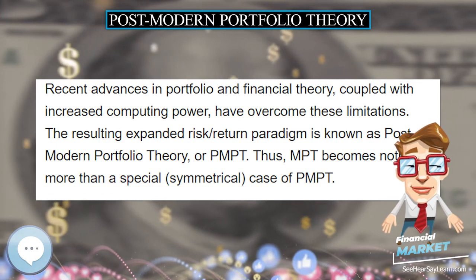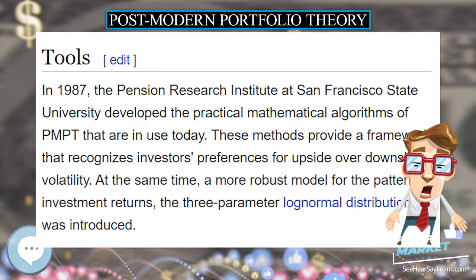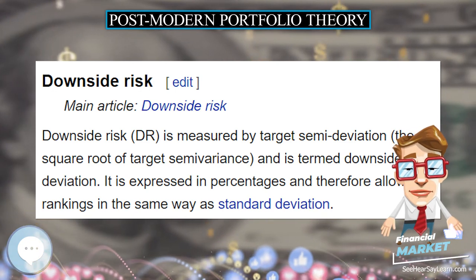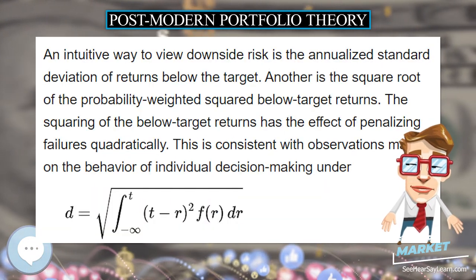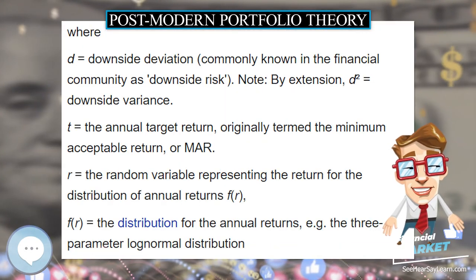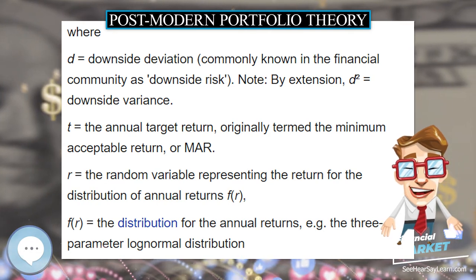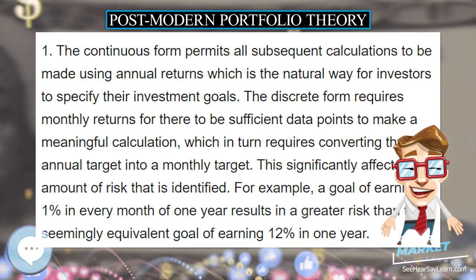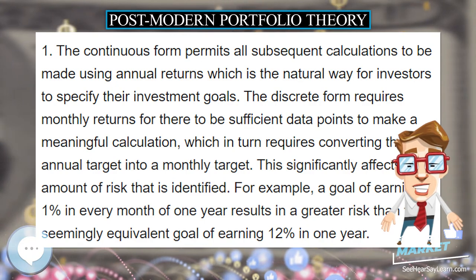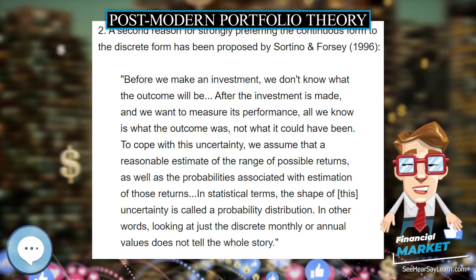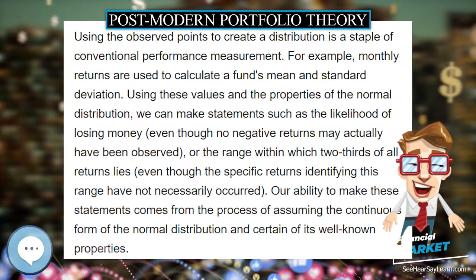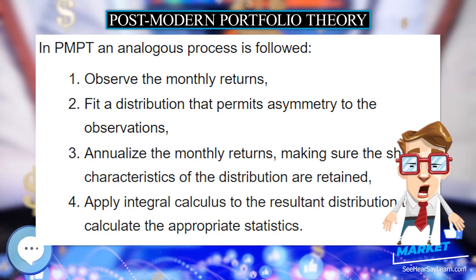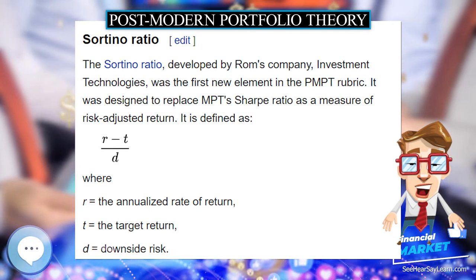The Sortino Ratio, developed by Rom's company, Investment Technologies, was the first new element in the PMPT rubric. It was designed to replace MPT's Sharpe Ratio as a measure of risk-adjusted return. It is defined as: R equals the annualized rate of return, T equals the target return, and D equals downside risk. The following table shows that this ratio is demonstrably superior to the traditional Sharpe Ratio as a means for ranking investment results. The table shows risk-adjusted ratios for several major indexes using both Sortino and Sharpe Ratios. The data cover the five years 1992 to 1996 and are based on monthly total returns.